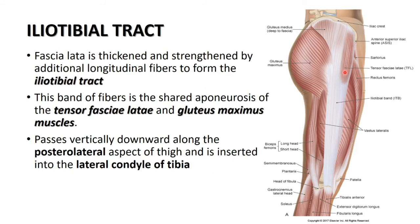The iliotibial tract shares and receives the aponeuroses of tensor fasciae latae and gluteus maximus. It is attached superiorly over the iliac tubercle and extends downward to attach over the tubercle on the lateral aspect of the tibia — specifically the lateral condyle of the tibia.